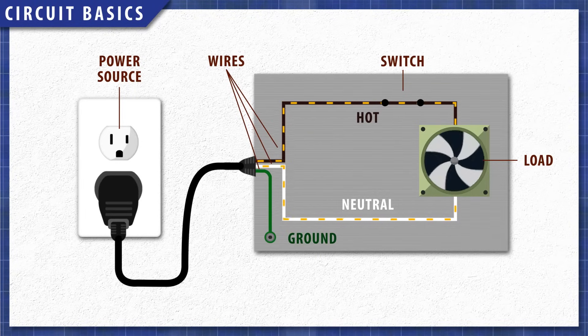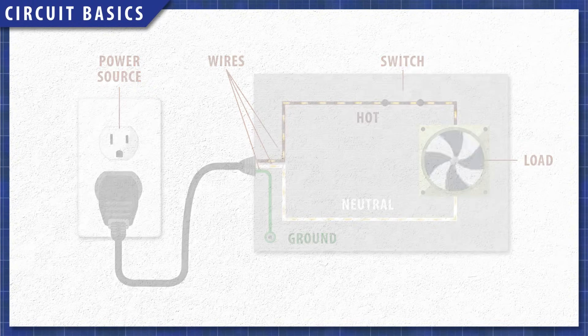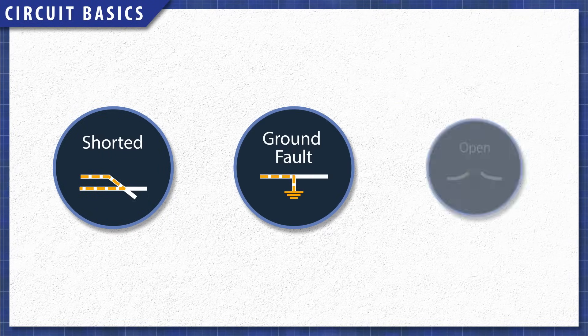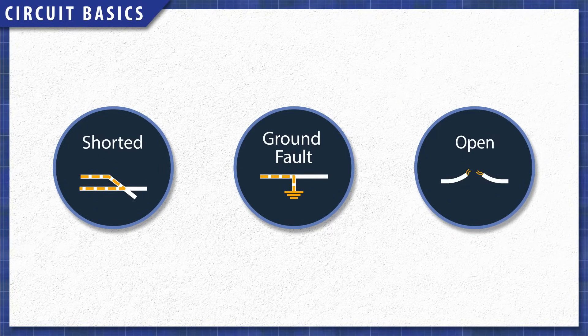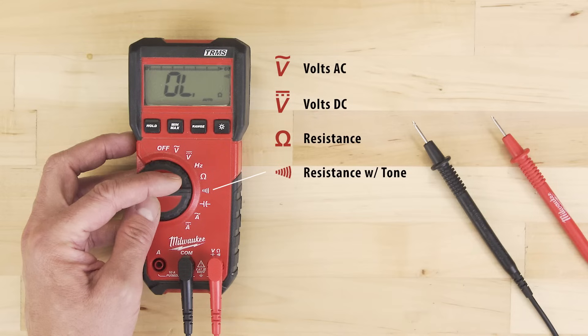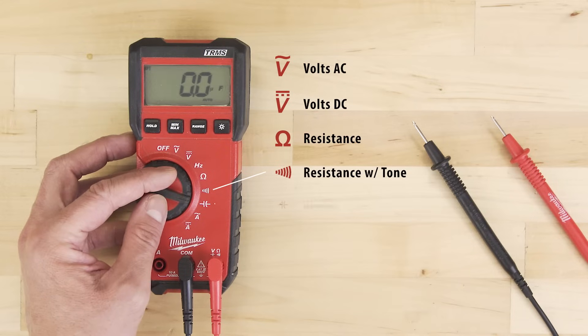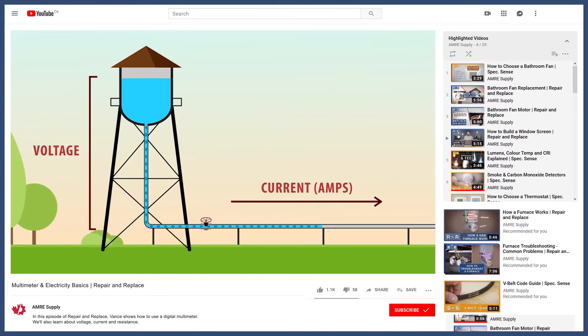In this episode we'll learn about the fundamentals of circuits and the three main ways that circuits fail. We'll look at short circuits, ground faults, and open circuits. Now before starting, it's recommended to watch our multimeter and electricity basics video. This is linked in the description below.